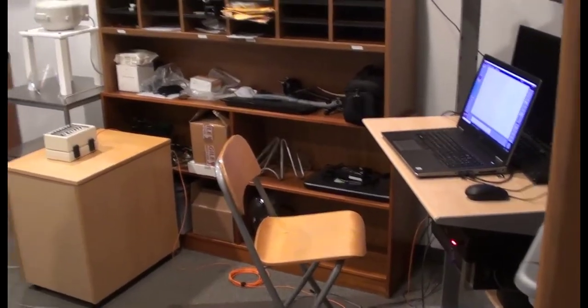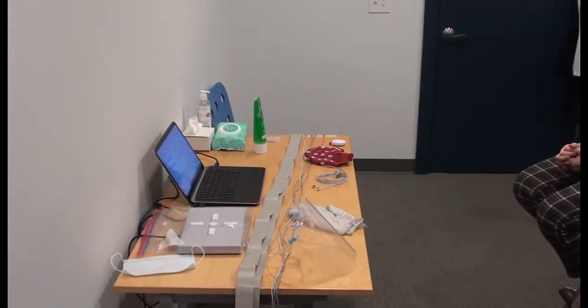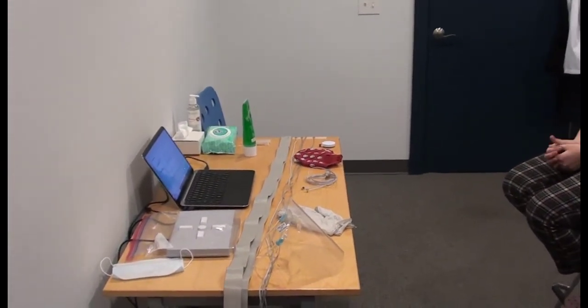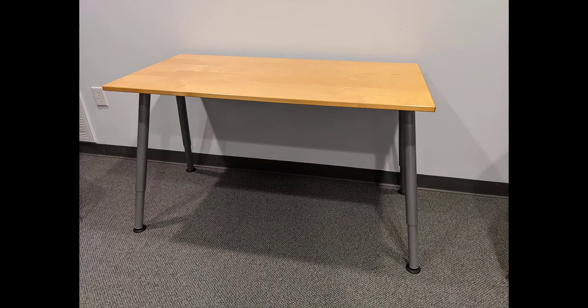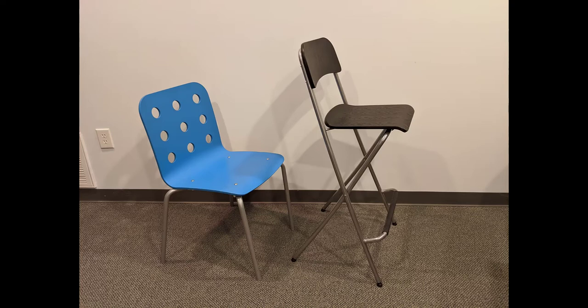When possible, choose wood or plastic furniture for your lab since any metal can exacerbate problems with induced interference from nearby powered devices. A sturdy wood table is recommended for the stimulus display and a tall stool can be helpful during cap and electrode prep. We recommend a wooden low back chair without swivel or wheels for the participant during the experiment.